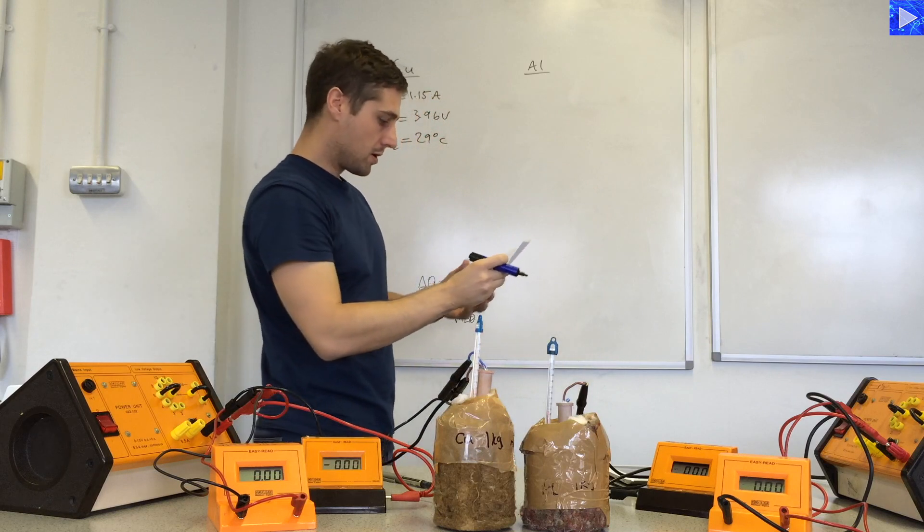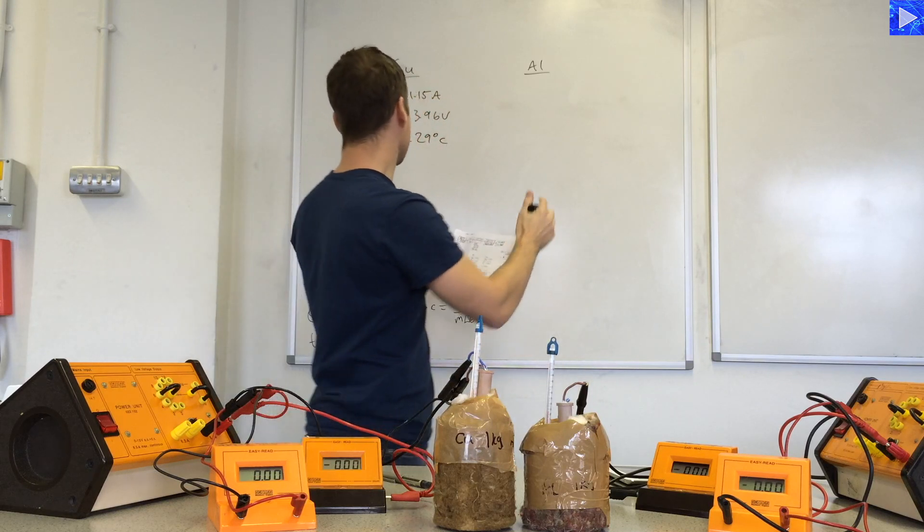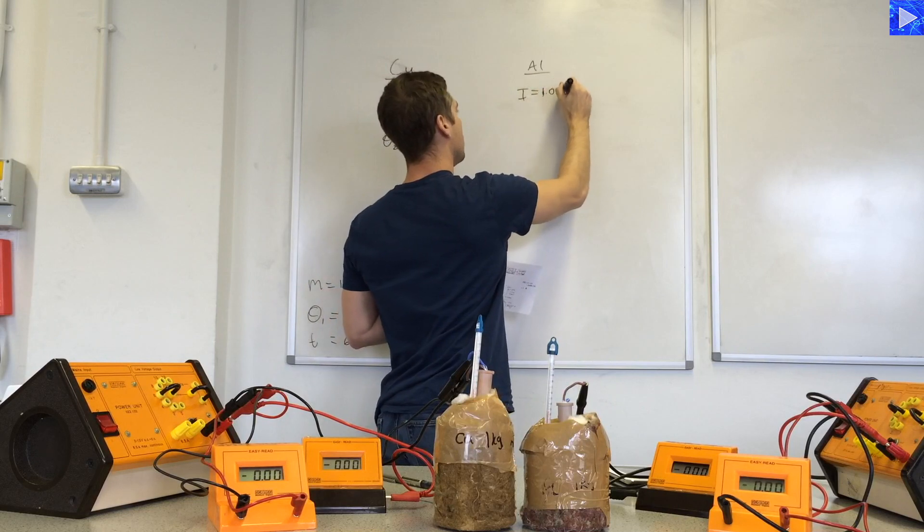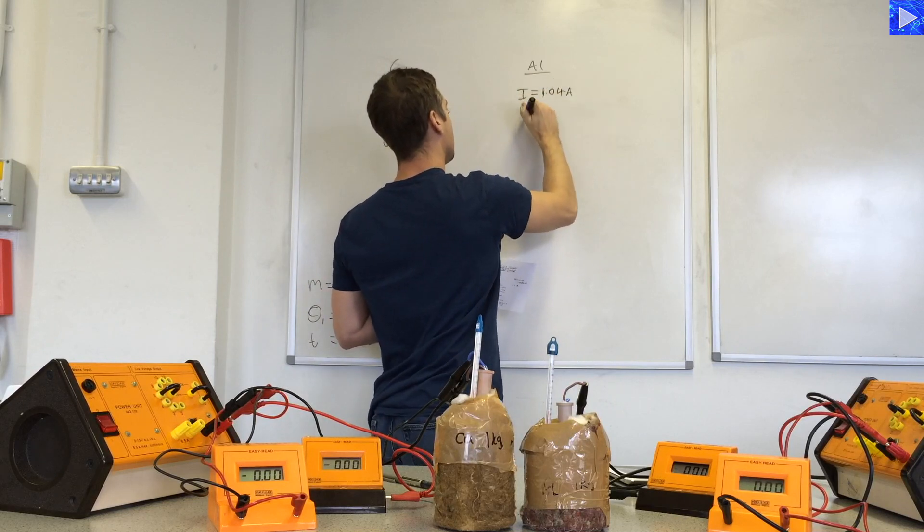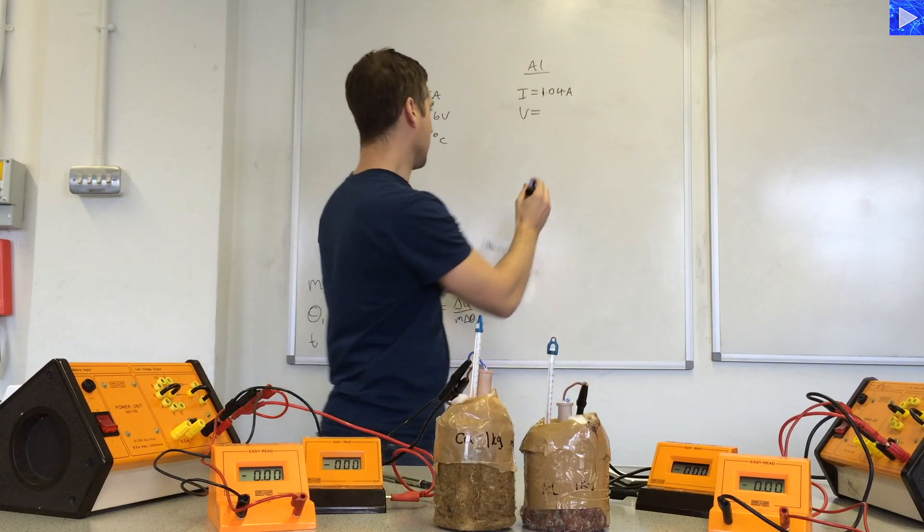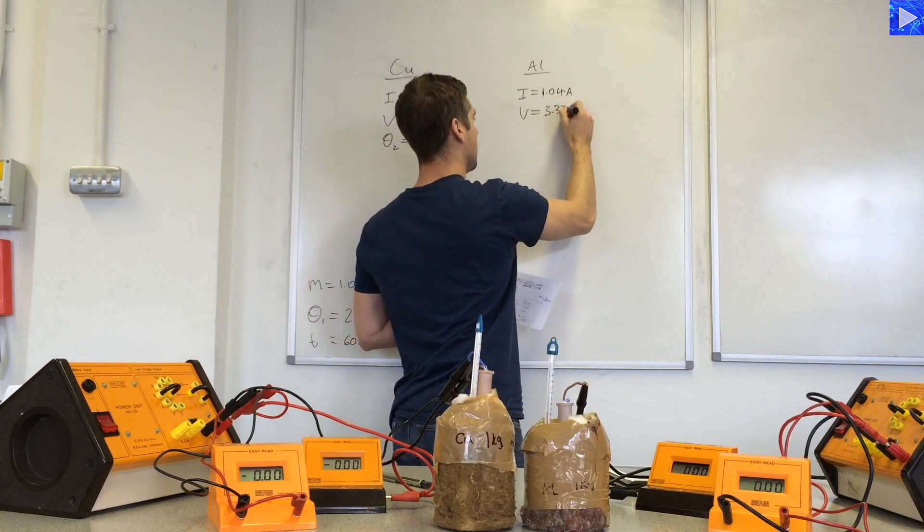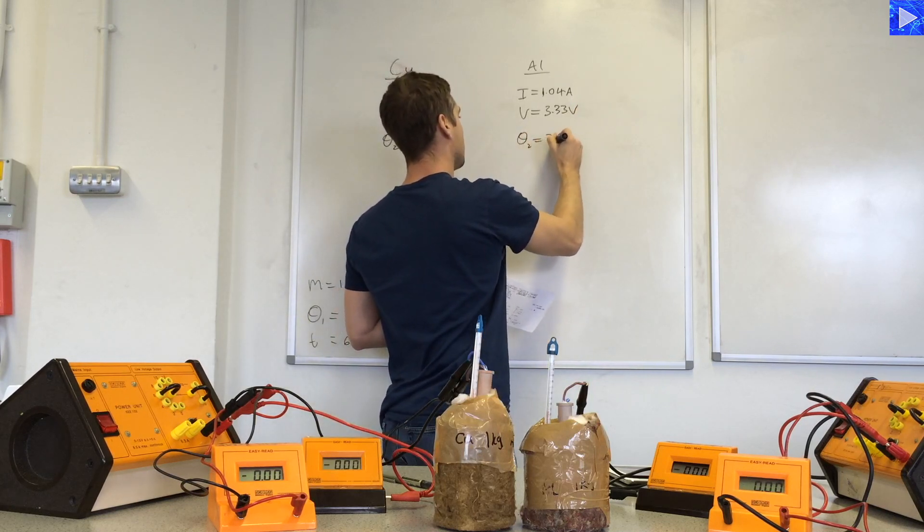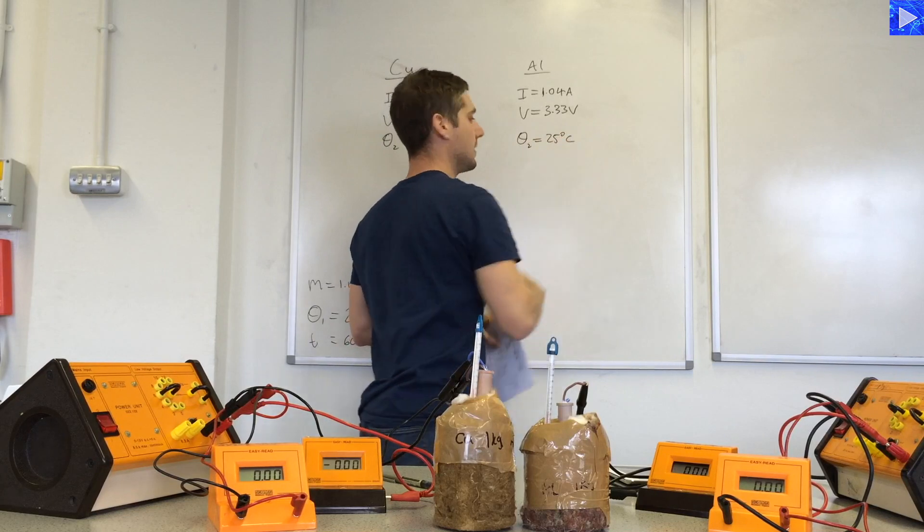For the aluminum block, I judged the average current to be 1.04 amps, and the voltage to be 3.33 volts, theta 2, 25 degrees C.